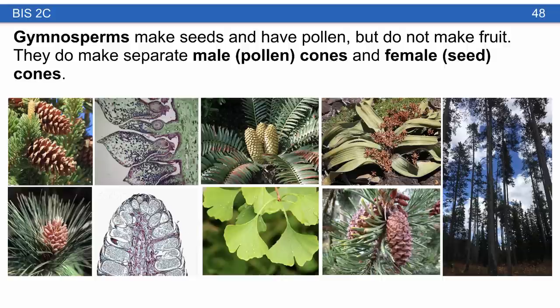In cycads, you get really massive cones. Ginkgo makes cones as well but they're much smaller. Welwitschia makes a series of smaller male and female cones. One thing that stands out is serotiny — some cones don't open until exposed to an environmental trigger. A classic example is lodgepole pines, whose cones only open after fire.